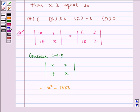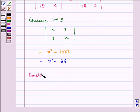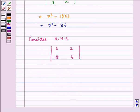which equals x² - 36. Now consider the determinant on the right-hand side, which is |6 2; 18 6|. On solving, this gives 6×6 - 18×2, which equals 36 - 36,